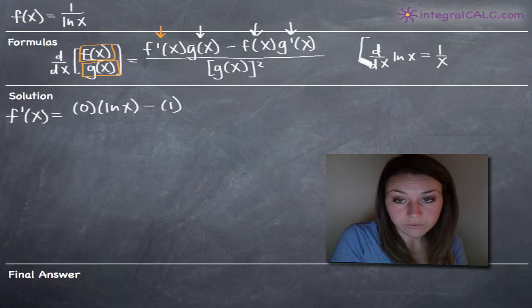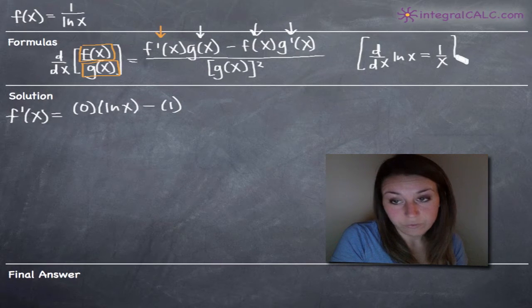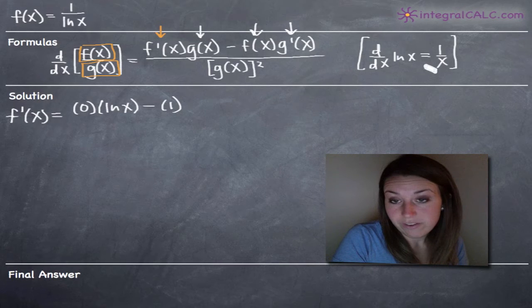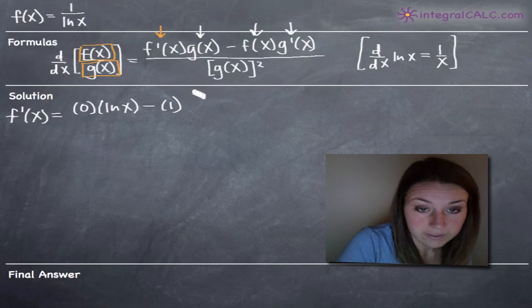Now the derivative of the natural log of x, we've written here as a formula. This is just a formula from calculus that you should definitely know and memorize. The derivative of natural log of x is 1 over x. So we'll go ahead and write that in for g prime of x.